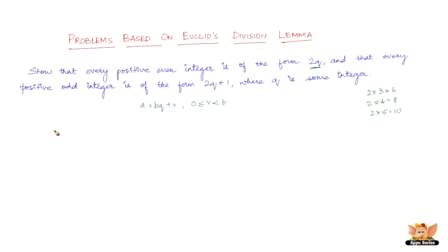So say now let a be any positive integer and b be equal to 2. So then by Euclid's division lemma, which is a equals bq plus r, we have—and also there exists